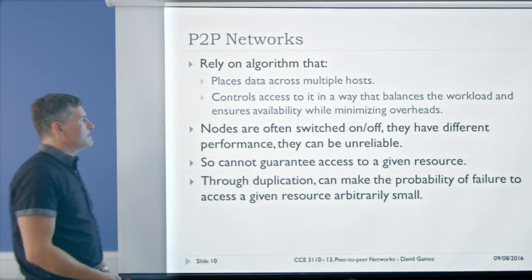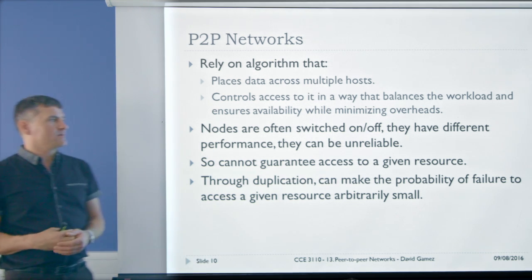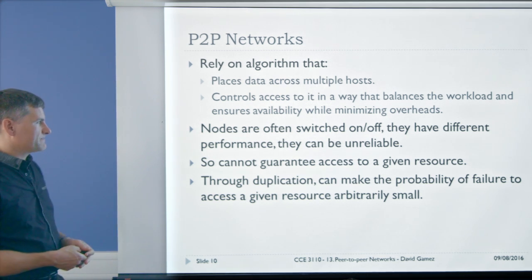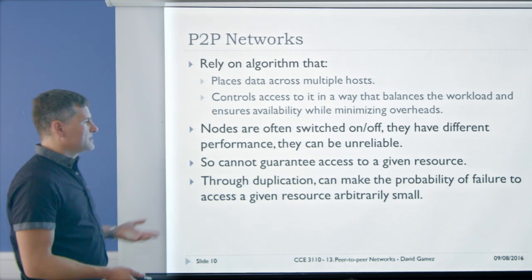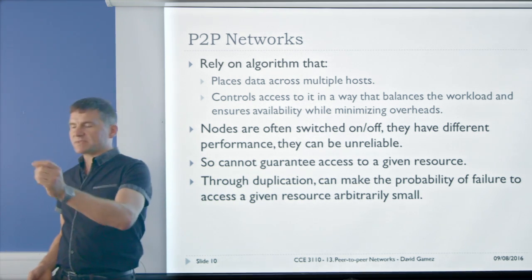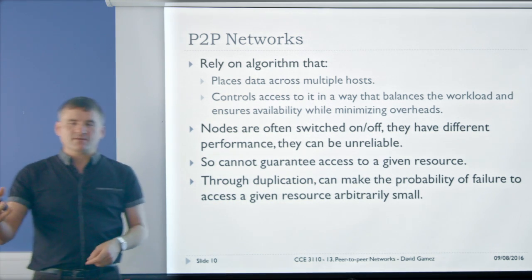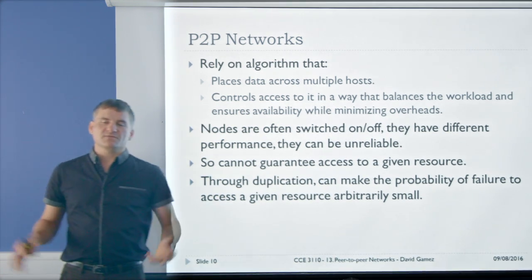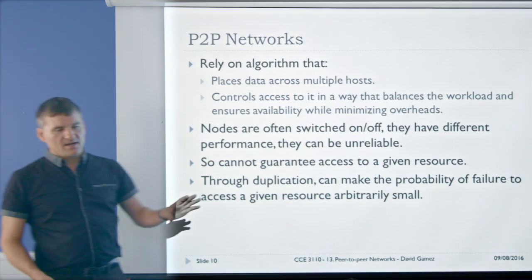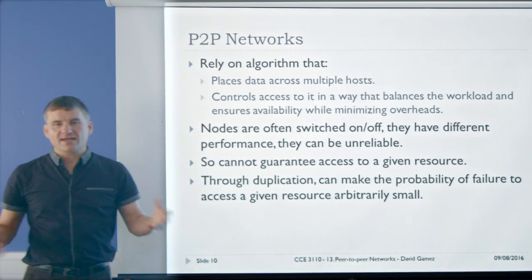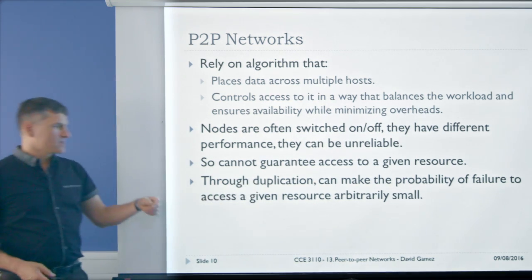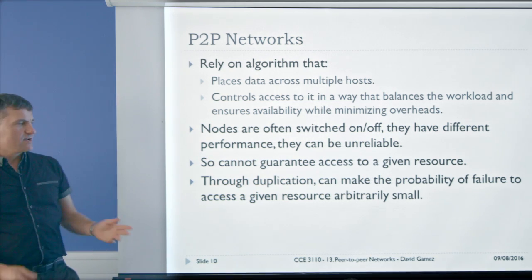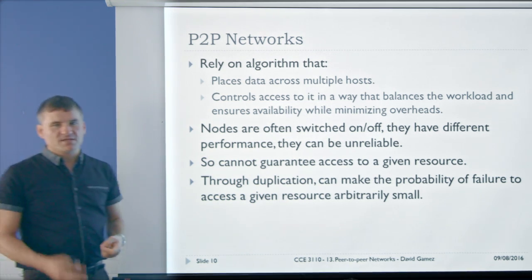The peer-to-peer network is all about the algorithm that places data across multiple hosts and controls access in a way that balances the workload and maximizes availability while minimizing the impact on each individual's computer. Since nodes can be unreliable — you can't guarantee access to a file stored on one particular user's computer if they go on holiday — you make multiple copies across many computers. This increases the probability any user can download it. You can make the probability of failure to access a resource arbitrarily small by making enough copies across the entire network.